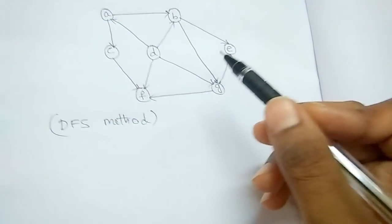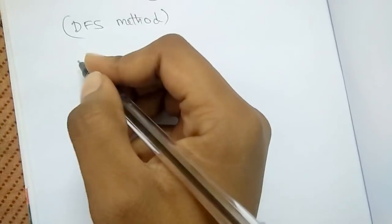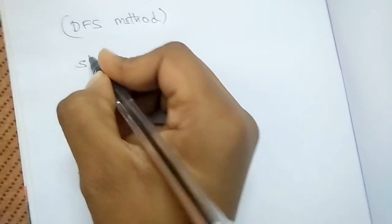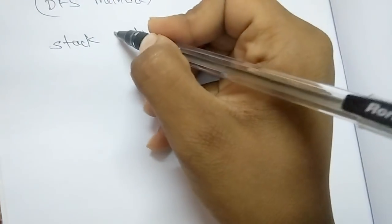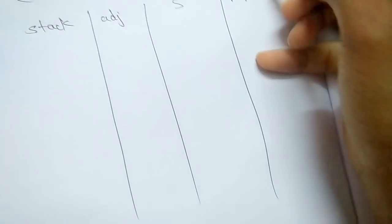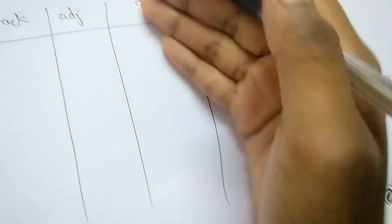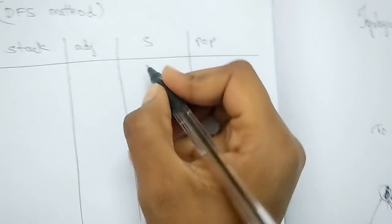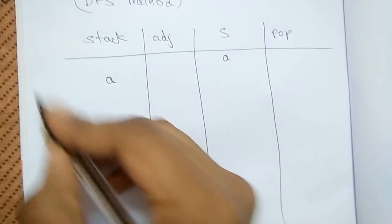To topologically sort the vertices of a directed graph using the DFS method, we start with a tabular column with the column names: Stack, Adjacent, and Pop. Whatever vertex I've encountered I'll write down in the Stack column. I'll start alphabetically with vertex A, so in the Stack column I'll fill in A.